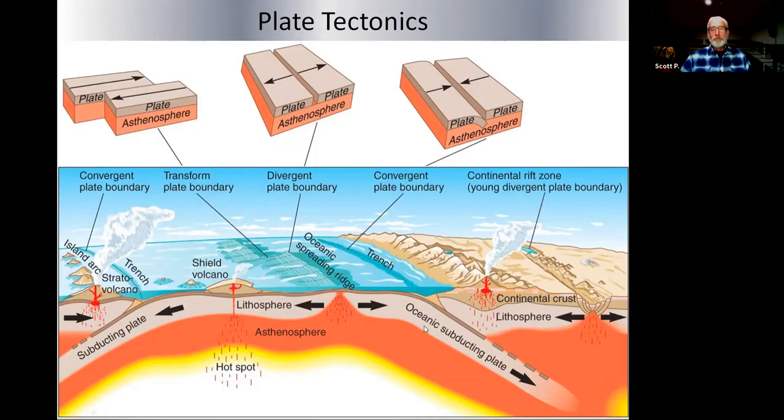The basic types of plates are oceanic plate, which is in the ocean, and continental plate. Some of the major features of plate tectonics are the spreading ridge, where plates diverge, and the convergent plate boundary, which is often called a subduction zone.